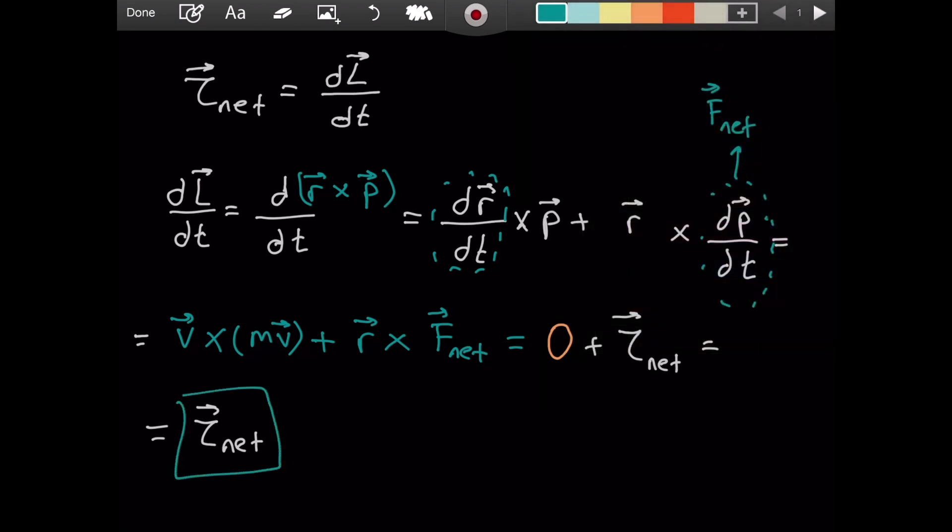And look at this. On the right, we have the net torque. And on the left, we have the time derivative of the angular momentum. So we've done it. We derived Newton's second law for rotational motion.